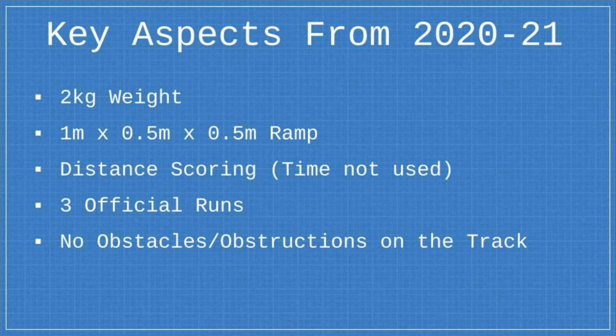First, let's take a look at some of the key aspects from the 2020 to 2021 Science Olympiad season. They restricted the weight of the gravity vehicle to 2 kilograms. The ramp had to fit within 1 meter high by half a meter by half a meter width and length. Distance only was used for scoring, so time wasn't used. There were three official runs, two of which counted towards the final score, and there were no obstacles or obstructions on the track.